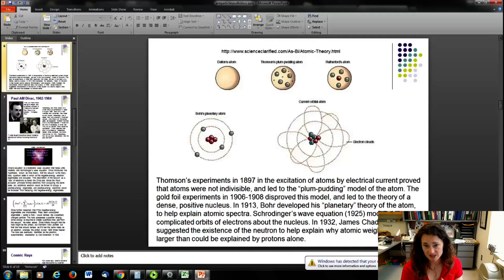The gold foil experiments in 1906 to 1908 by Rutherford disproved the model, and led to a theory of a dense positive nucleus. And then from there Bohr took over and he developed sort of a planetary model of the atom with the nucleus at the center, sort of like the sun, and the electrons moving about in circular orbits. And then it took quantum mechanics to develop the theory of the atom that we have now with the orbitals that are dictated by the Schrodinger equation. In 1932, James Chadwick actually suggested the existence of a neutron to help explain why atomic weights were larger than could be explained by protons alone. And now you have your modern conception of the atom. So, this is sort of the beginning of beginnings of atomic theory. What we're going to talk about in this chapter goes on from there.